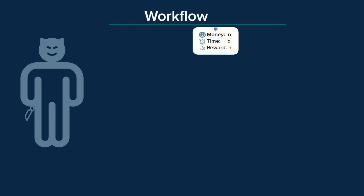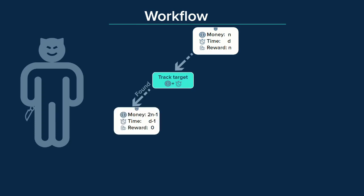At any point, he could do one of the following actions. One: spend one day and one bitcoin to look for the target in order to finish the job. If successful, he can report to his employers and collect the promised reward. If unsuccessful, he'll need to try again the next day.